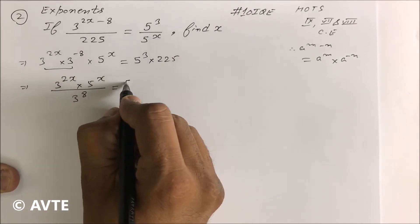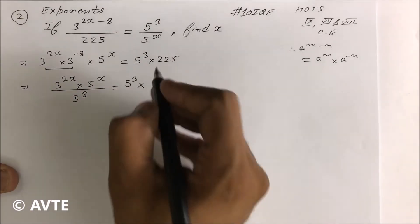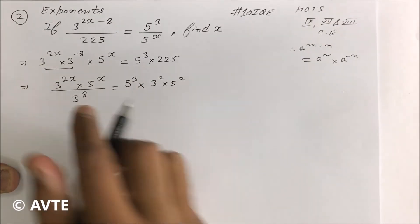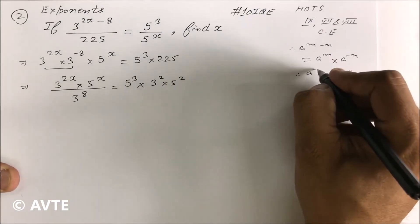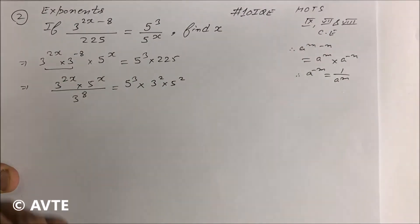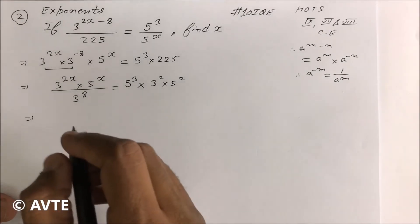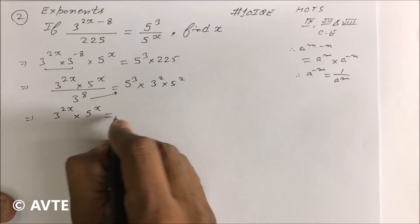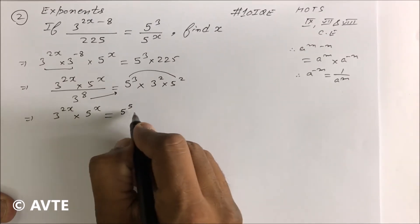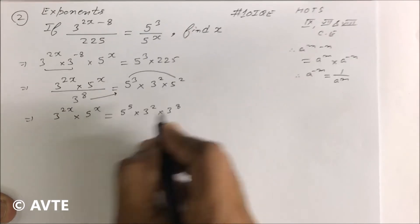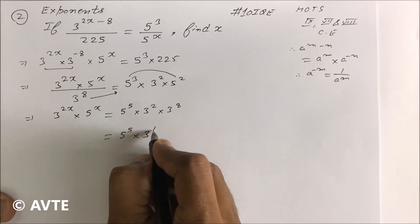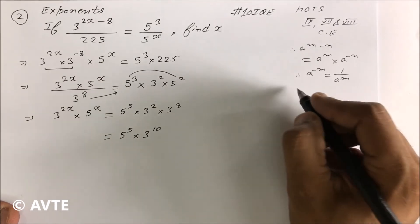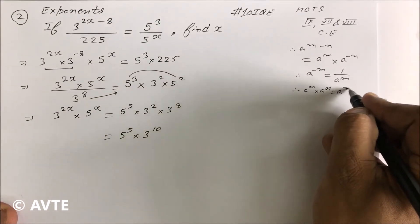This equals 5 cube into 225. We write 225 as 15 square, and 15 square as 3 square into 5 square. Using the formula a raised to power minus m equals 1 upon a raised to power m, we bring 3 raised to power 8 up to the right side. So we get 5 raised to power 5 into 3 raised to power 2, multiplied by 3 raised to power 8, giving 5 raised to power 5 and 3 raised to power 10, since powers are added using the formula a^m into a^n equals a^(m+n).